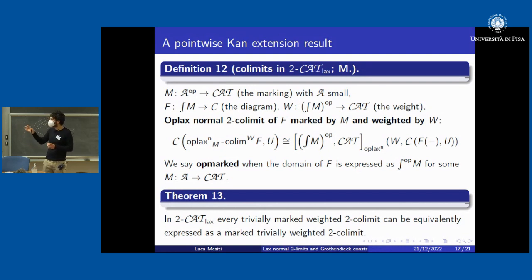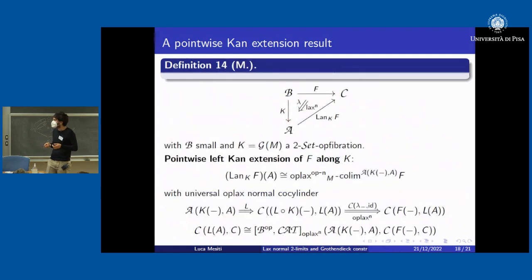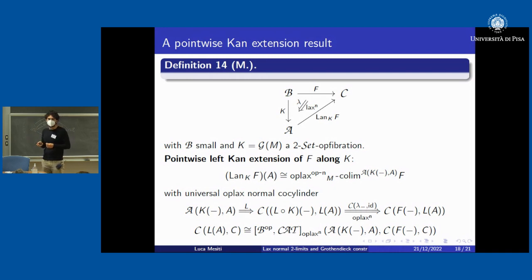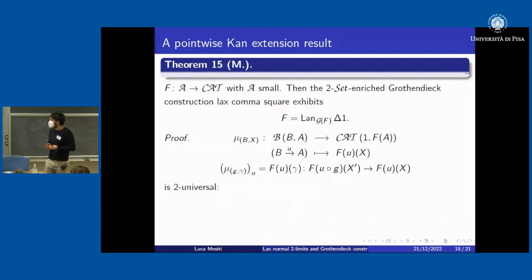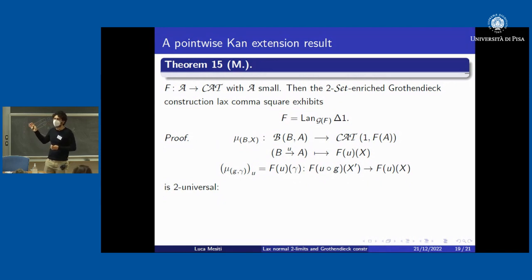I proposed using the oplax normal colimit, not necessarily conical anymore, making more explicit the piece of structure given by a marking to view the domain as a Grothendieck construction. We can then rephrase the conicalization theorem in dimension two: in 2-Cat, every trivially-marked weighted colimit is equivalently a marked trivially-weighted colimit. I then proposed a definition of pointwise left Kan extension along a two-set-fibration, taking the usual enriched definition and adding the marking we naturally have when extending along a two-set-fibration.